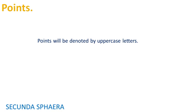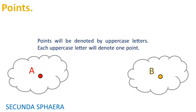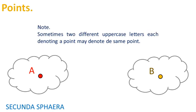Points will be denoted by uppercase letters. Once an uppercase letter is used to denote a point, it cannot be used to denote another point. Sometimes two different uppercase letters each denoting a point may denote the same point. A point can be denoted by two different ways, which is perfectly fine with geometric notation.